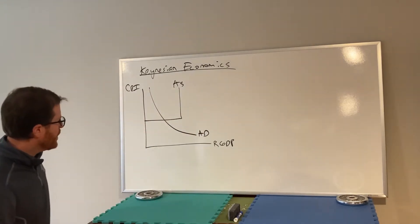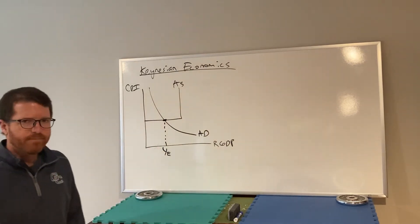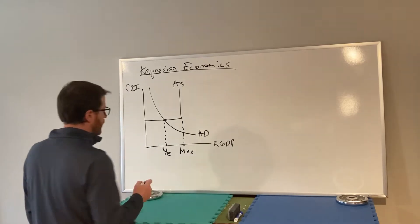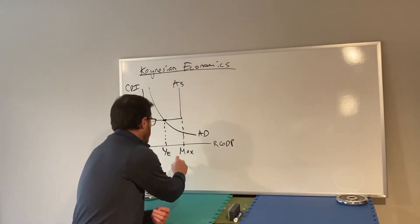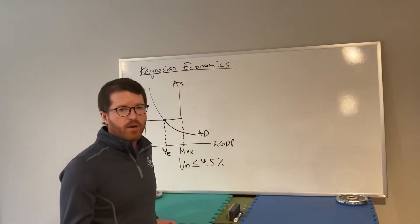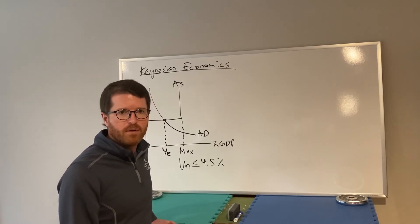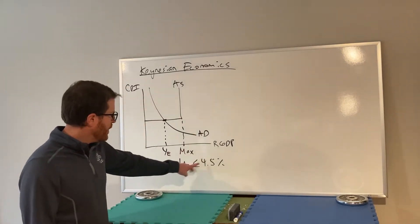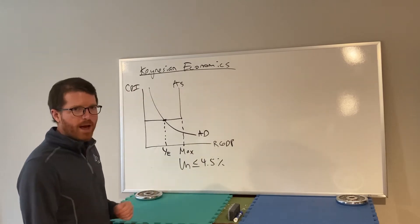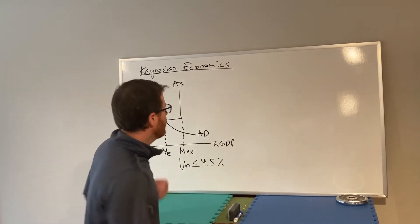In this economy there will be an equilibrium. Where those graphs cross, you get the real GDP. For Keynes, there's also a maximum production level — the unemployment rate being less than or equal to four and a half percent. Keynes doesn't worry much about inflationary gaps; he believes the government can always step in to fix any problems. So when unemployment is at four and a half percent or lower, the economy is maxed out. In this circumstance, what we have is a recessionary gap.